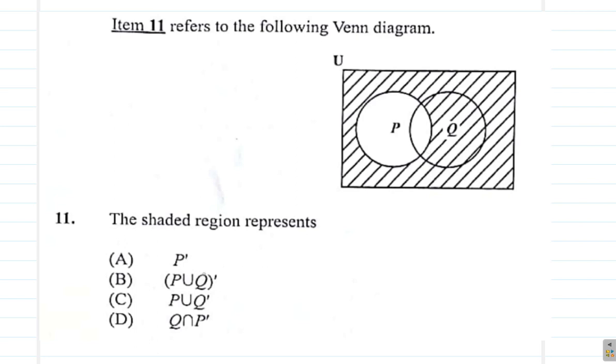P union Q complement. But here, we have P union Q complement. This should not be shaded because this is part of P union Q. Complement would be outside of that. So it's not B.